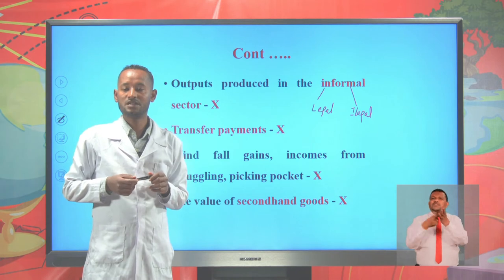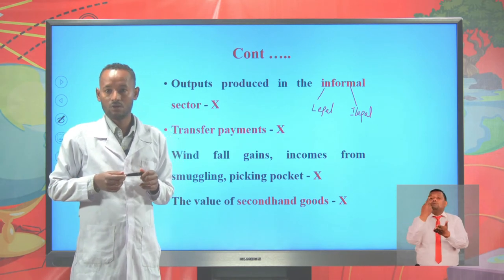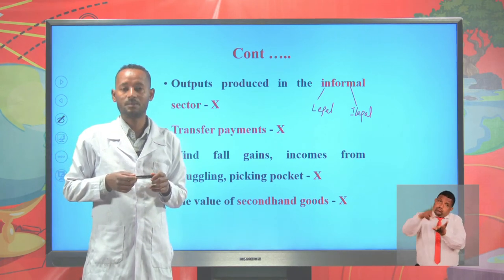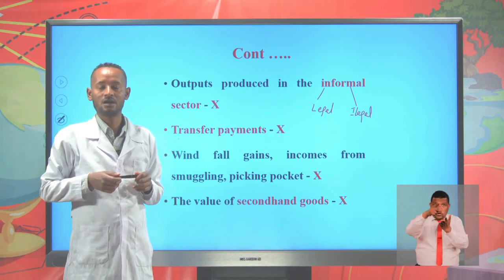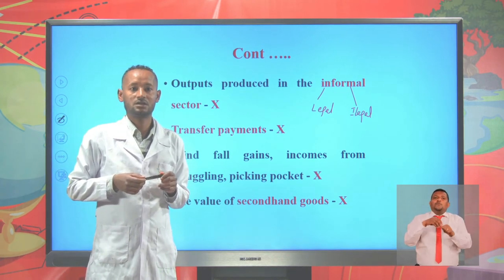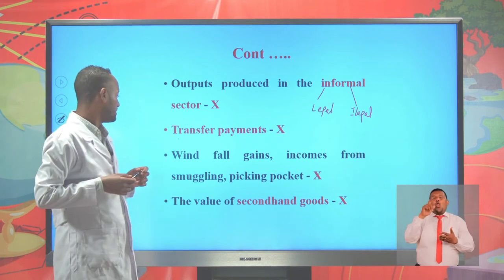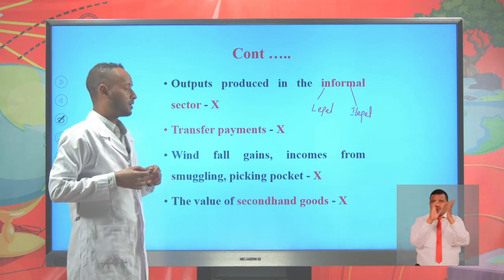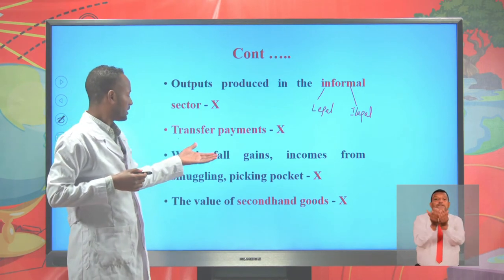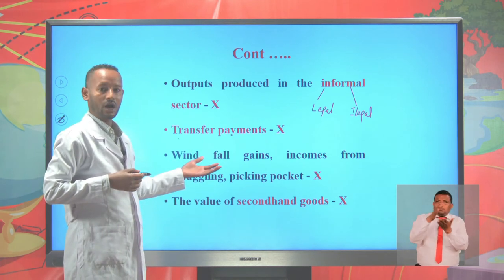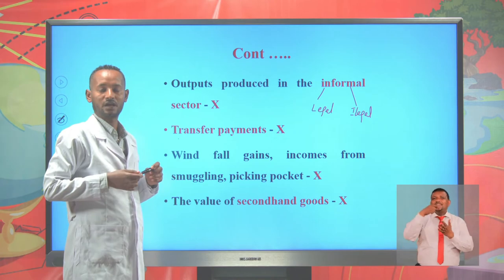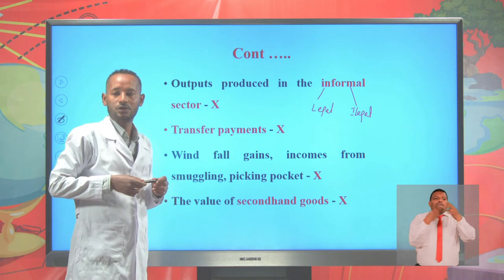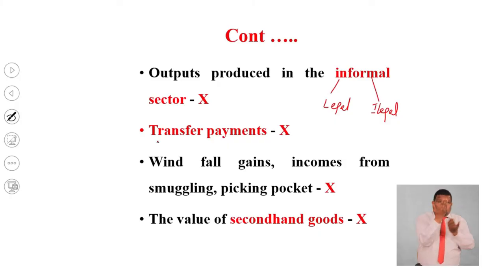Another problem is that transfer payments are not included in measuring GDP. Transfer payments are payments made by the government to individuals who cannot offer services in return, for example pension payments and unemployment insurance compensation. Also, income from smuggling and pickpocketing are not included in GDP estimation because they are not productive transactions. The value of second-hand goods is also not included because it is not current production.